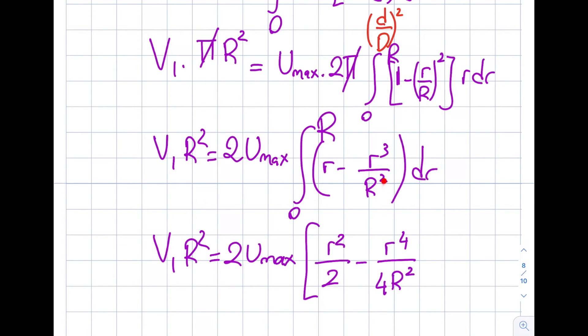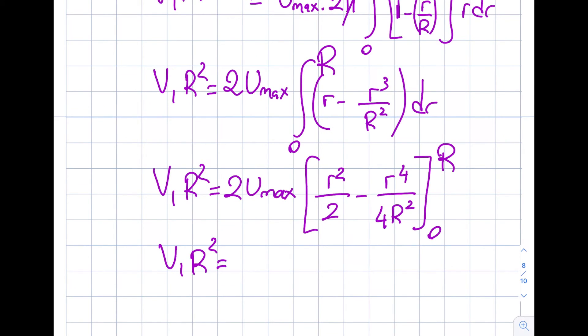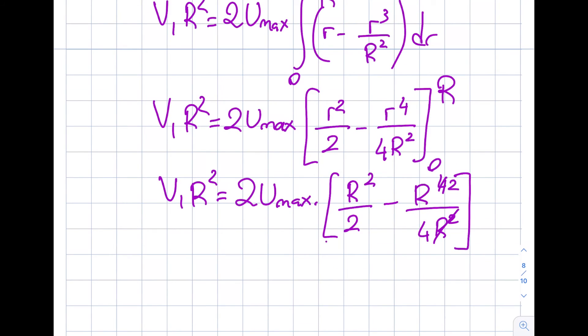So I sometimes ask these kind of questions in the exam. And take it easy. Sometimes I see students doing this r to the power of 3 divided by 3 kind of. This capital R is like 1, 2, 5, 10. It's a constant value. So this is going to be from 0 to capital R. When I plug r over here, this is going to be capital R square divided by 2 minus capital R to the power of 4 divided by 4 r square.